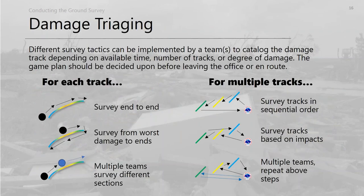When it comes to damage triaging, different tactics can be used depending on the event — there's no one set way. For a single track, you can survey end to end, start at the worst damage and work outward, or use multiple teams to stitch the track together. For multiple tracks, survey sequentially by distance from the office, start with the most severe track, or break up teams as needed.